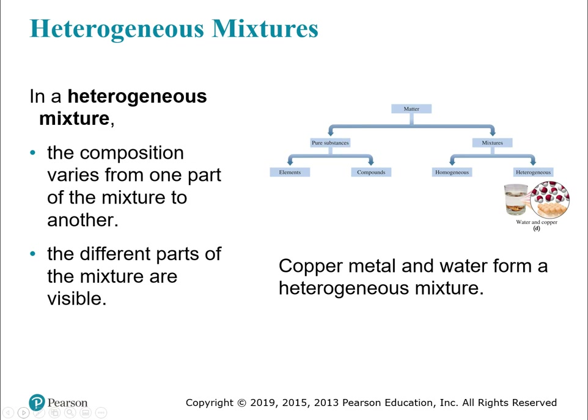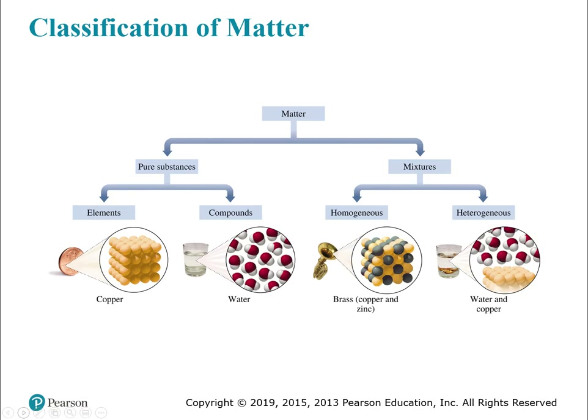Heterogeneous mixtures are ones where you can see the different parts — there's visible variation. The key is that the different parts are visibly different. For example, if you put a copper penny into a cup of water, that's a heterogeneous mixture — you can clearly see the penny and clearly see the water. That completes the main classification. Matter is the big category — everything that has mass and occupies space.